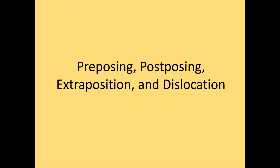The topic of this video deals with four kinds of non-canonical clauses. There are four different processes we're going to look at today whereby you can make a non-canonical clause. Those are pre-posing, post-posing, extra-position, and dislocation. And there are two kinds of dislocation, so we could actually say that there are five.